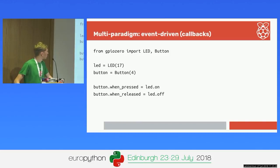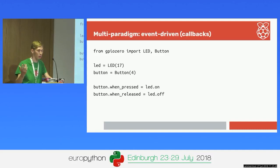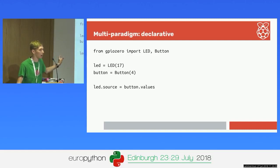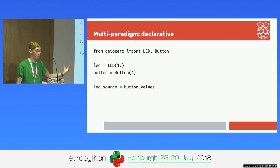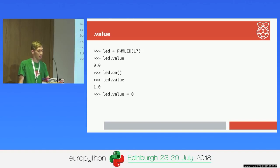Then you have an event-driven approach where you assign an action to the button being pressed and the button being released. A threaded callback fires the LED.on function. You can provide any callable - your own custom function - to fire when you press a button. The final example reduces it to just one line defining the behavior. You set the source of the LED - from the LED's point of view, where do I get my values from? And button.values is an iterator yielding its current value continuously in the background.